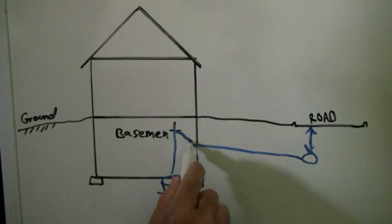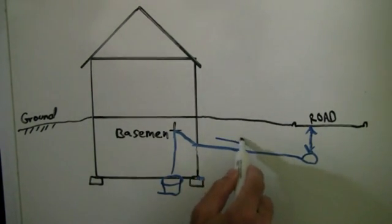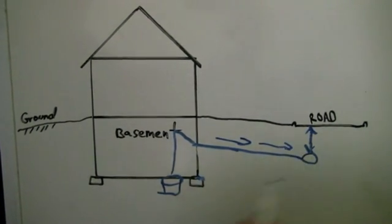So as you can see here, a grinder pump is going to be needed to pump any floor drains or basement bathroom effluent up and to that pipe so it can make its way by gravity out to the street.